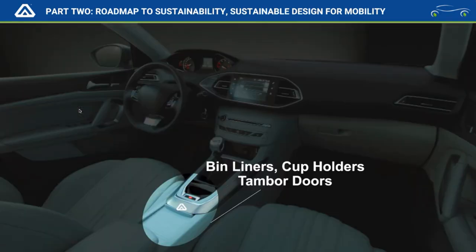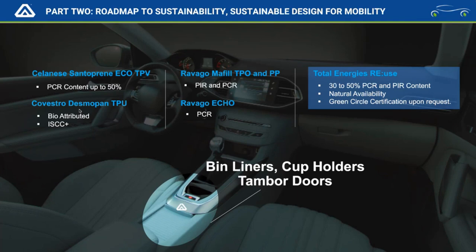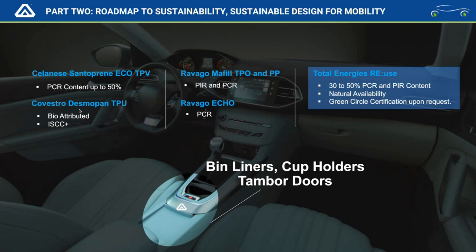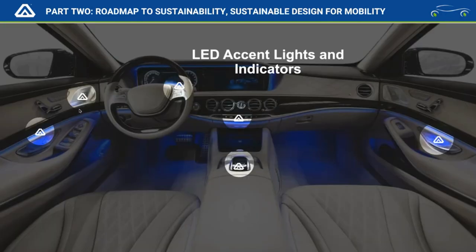For bin liners, cup holders, and tambour doors, a differentiated approach using post-consumer and post-industrial materials is key. Through our partner TotalEnergies, we have a polypropylene product available in impact copolymer or homopolymer depending on rigidity and heat resistance requirements. It comes with Green Circle certification upon request and offers similar properties to standard prime products, with outstanding molecular compatibility to TPE — such as a Santoprene Echo TPV at 50% recycled content.